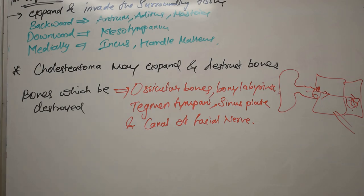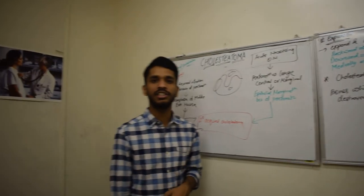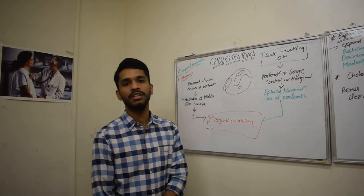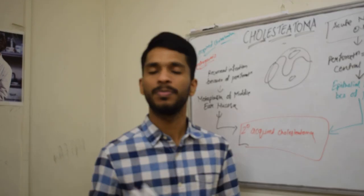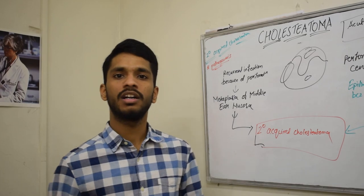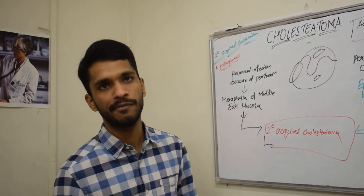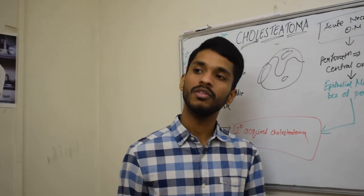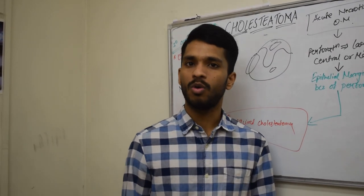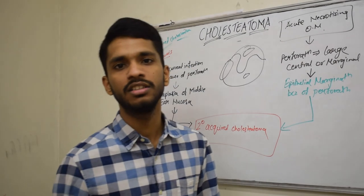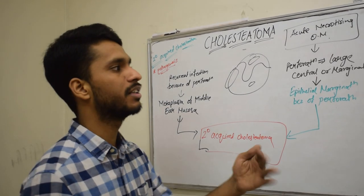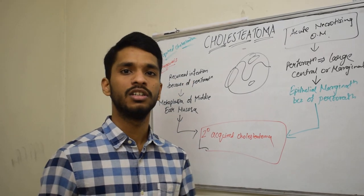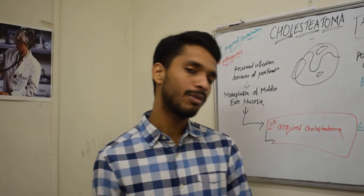So that was all about Cholesteatoma. To summarize: Cholesteatoma is an abnormal skin growth that develops in the middle ear cavity just behind the eardrum. It consists of a matrix of keratinized squamous epithelium and a central white mass of keratin debris. There are many theories of origin, a classification of congenital and acquired (primary and secondary), pathogenesis for each type, and its expansion with the bones it can destroy.